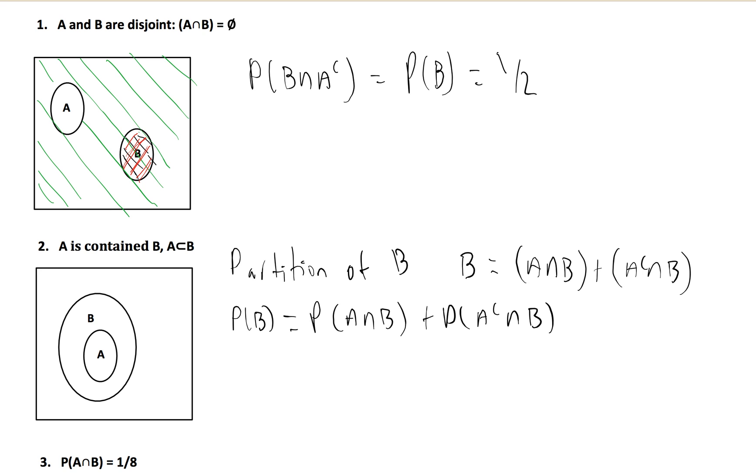Now we know the probability of B is one half, so we want to find out what is the probability of A intersect B here. Well, if we can see, all of the elements that are in A and B are simply just in A, right?